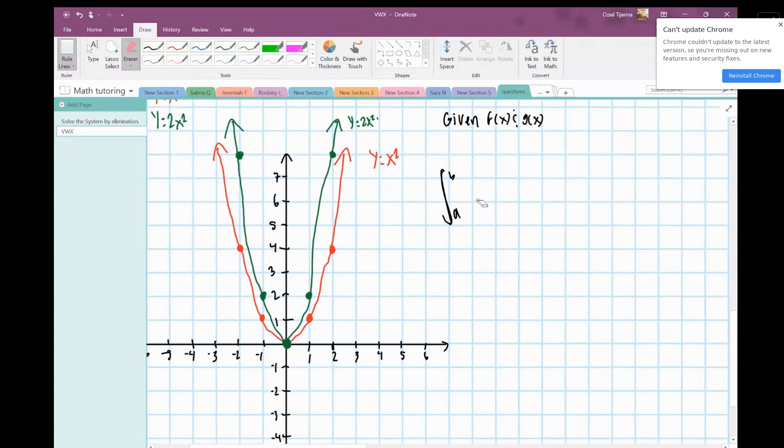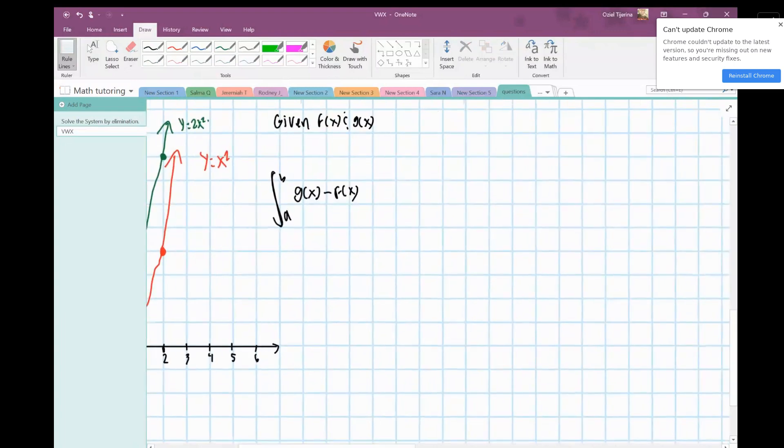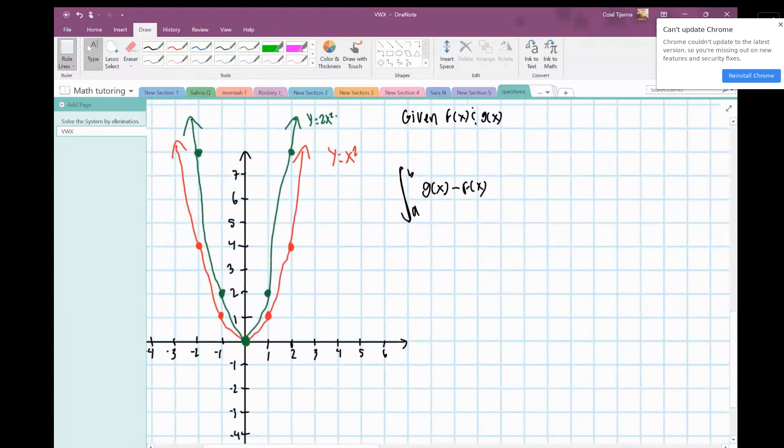The integral between those two functions is the integral from a to b. It would be g(x) minus f(x), being that g(x) is the upper function, with respect to x. So the thing is with this function...